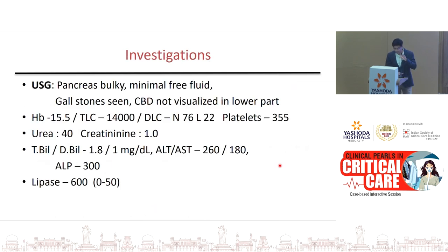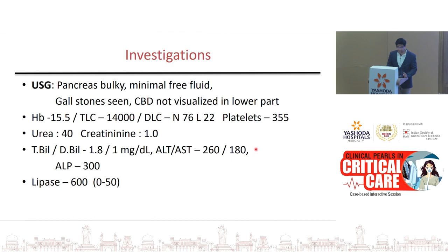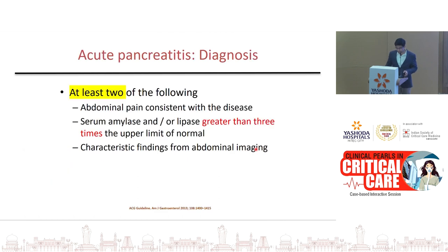On ultrasound we can see a bulky pancreas confirming pancreatitis, and gallstones are seen. ALT and AST levels of 260 and 180 give a clue to biliary etiology as the cause of pancreatitis. Diagnosis of pancreatitis requires at least two of the following: upper abdominal pain, elevation of amylase or lipase at least three times the upper limit of normal, and imaging — which need not be a CT.